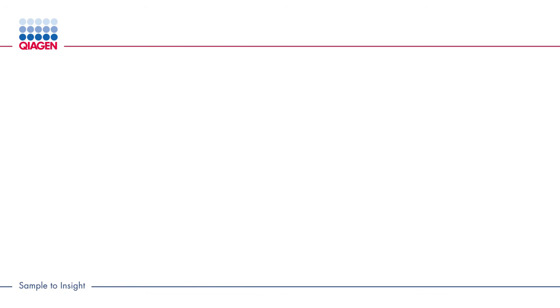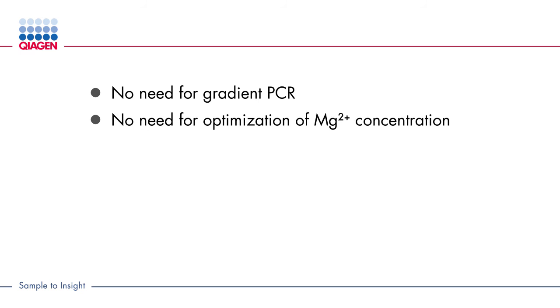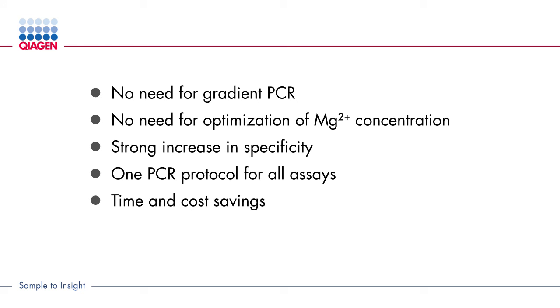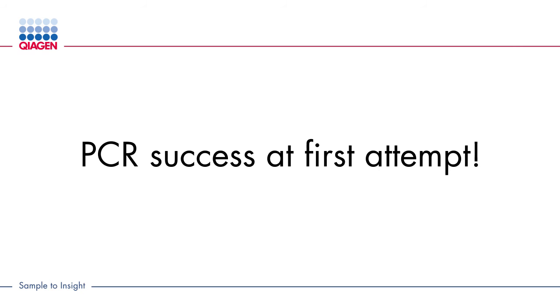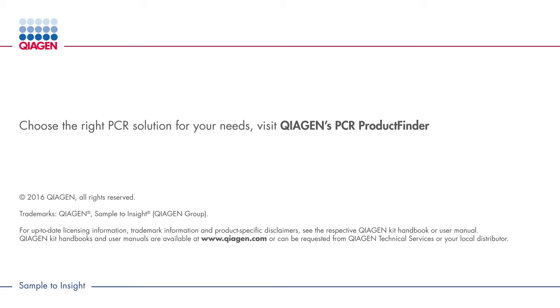This means no need for gradient PCR, no need for optimization of magnesium concentrations, a strong increase in specificity, one PCR protocol for all assays, time and cost savings, and ease of use. QIAGEN delivers PCR success at the first attempt. QIAGEN. Sample to insight.